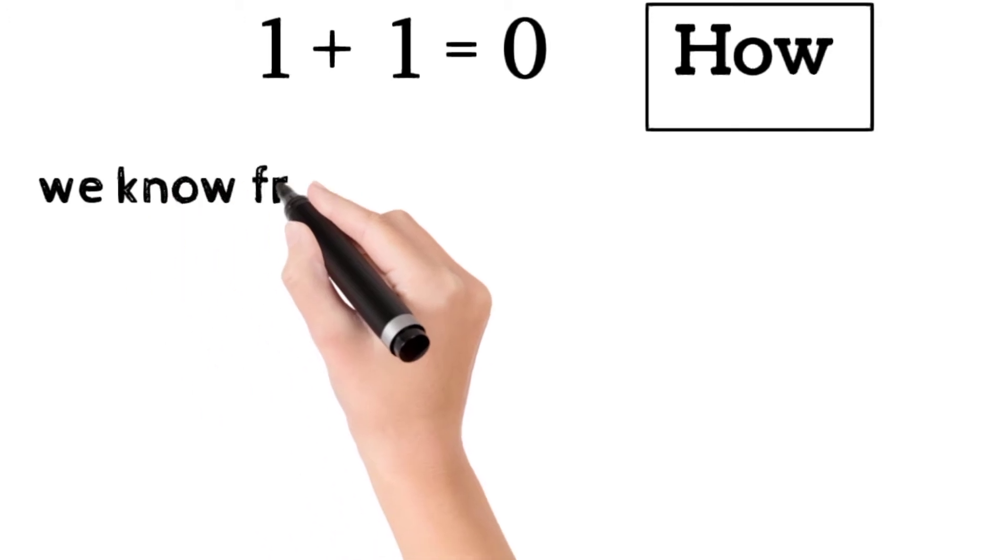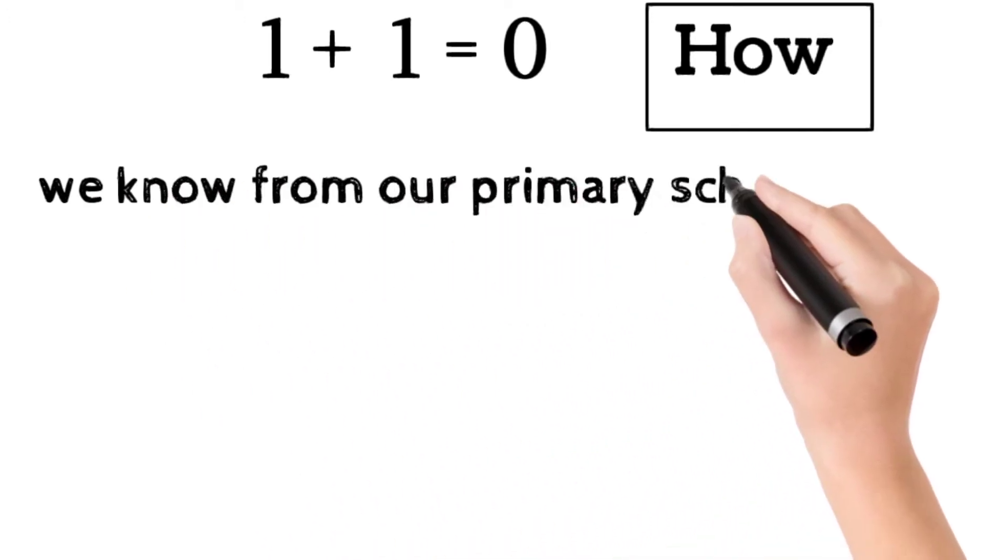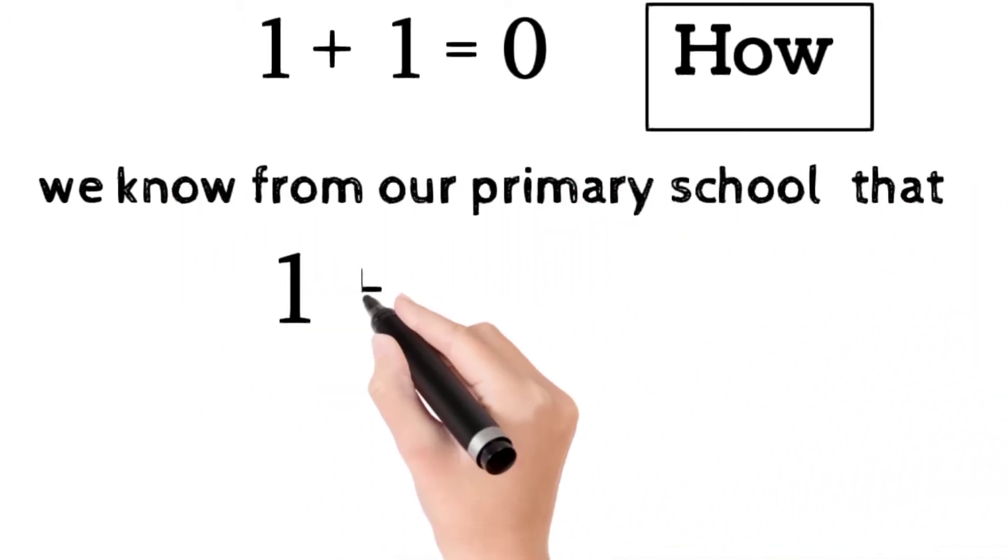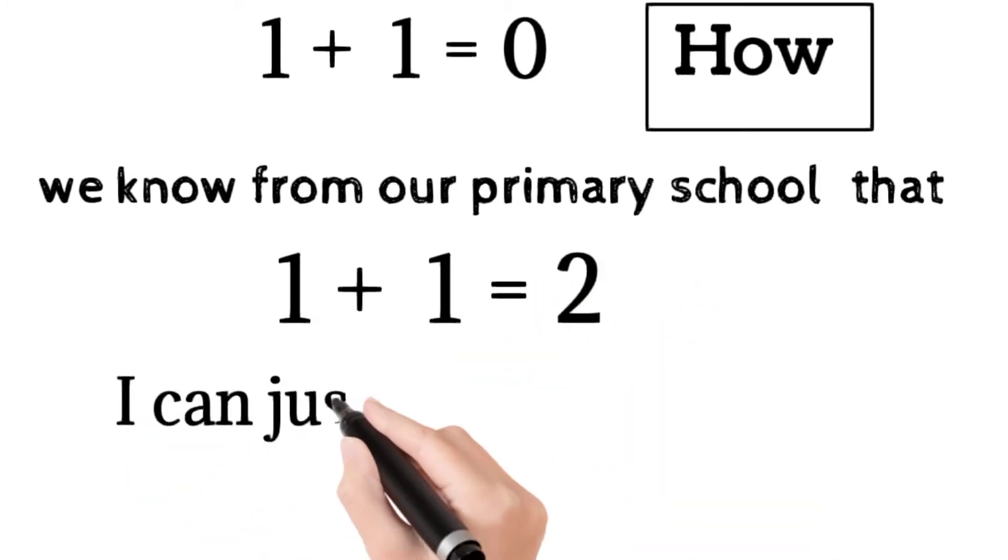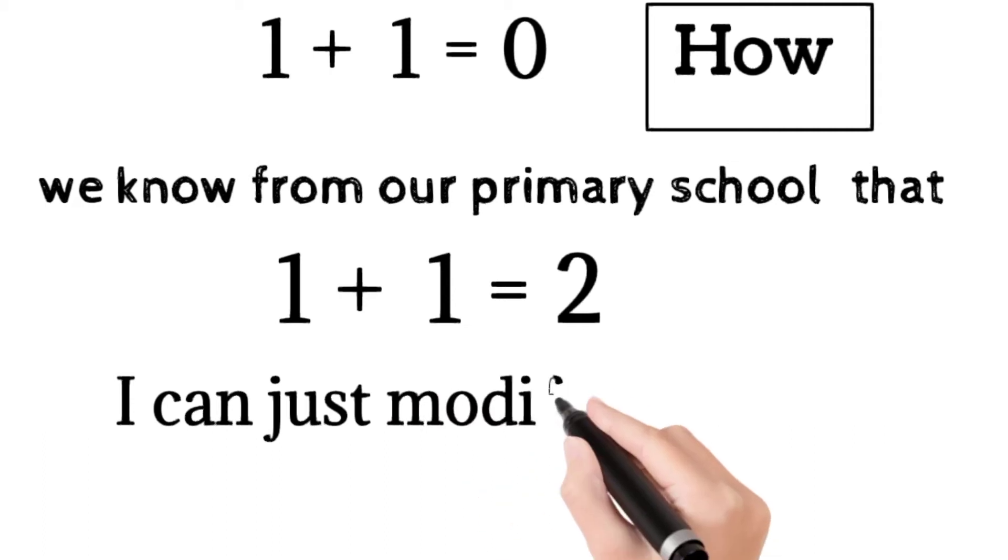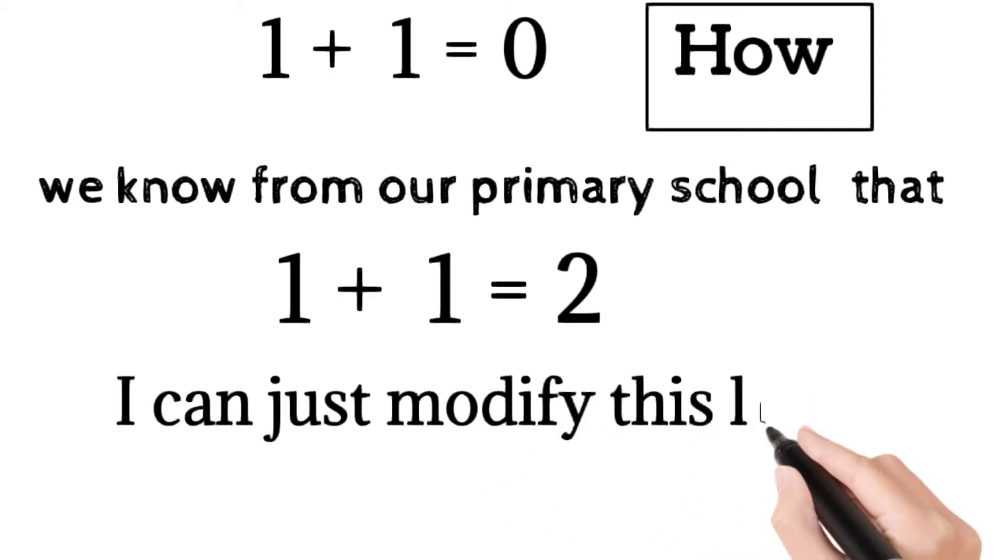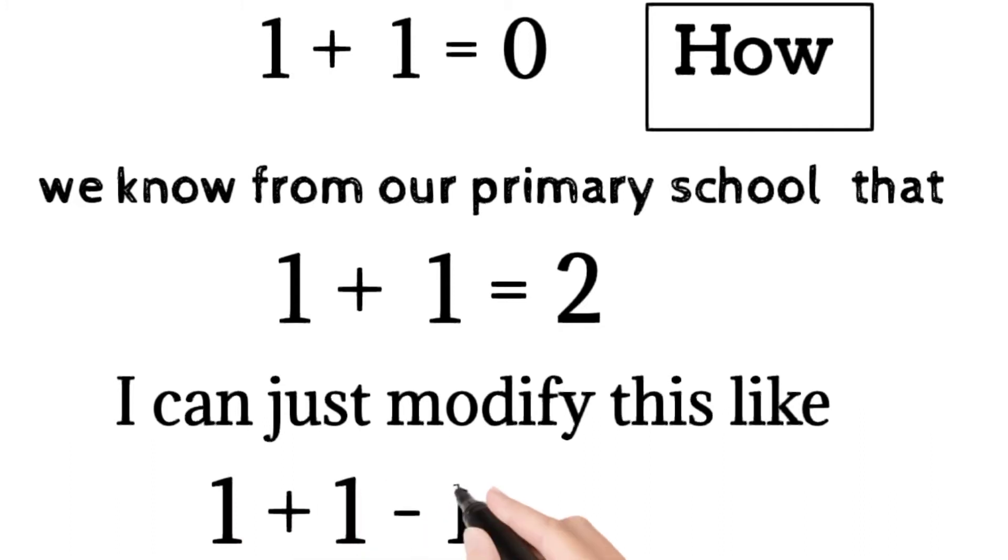To prove that 1 + 1 = 0, I have to go through this calculation. We know from our primary school that 1 + 1 = 2. I can just modify this like: 1 + 1 - 1 = 2 - 1.